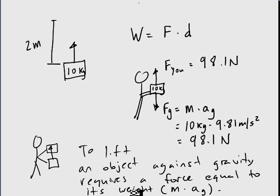So if we go back to our example, to lift a 10 kilogram mass, we're going to have to apply a force of 98.1 Newtons. And that force will cancel out the force due to gravity, and then we can lift the box up at constant velocity.